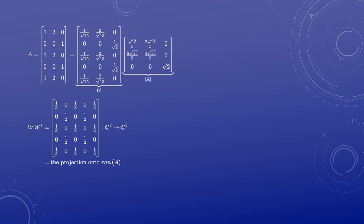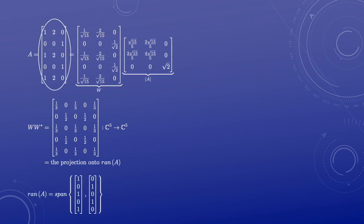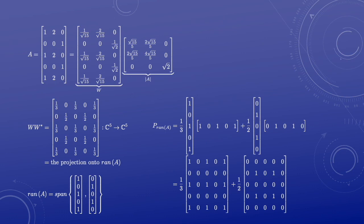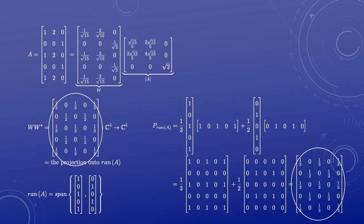Let's also check W W star. It is supposed to be the projection from C^5 onto the range of A. In the matrix A, the first two columns are linearly dependent, so the range of A is the span of these two vectors. It is a two-dimensional subspace of C^5. Again, the two vectors are orthogonal. So let's write down the projection from C^5 onto the range of A, and compare that with W W star. Using the fact that the two spanning vectors are orthogonal, this equals the sum of two rank-1 projections. This is indeed equal to W W star.